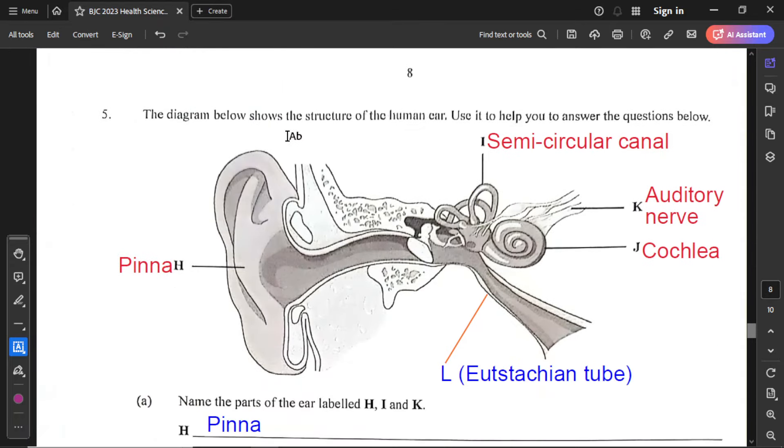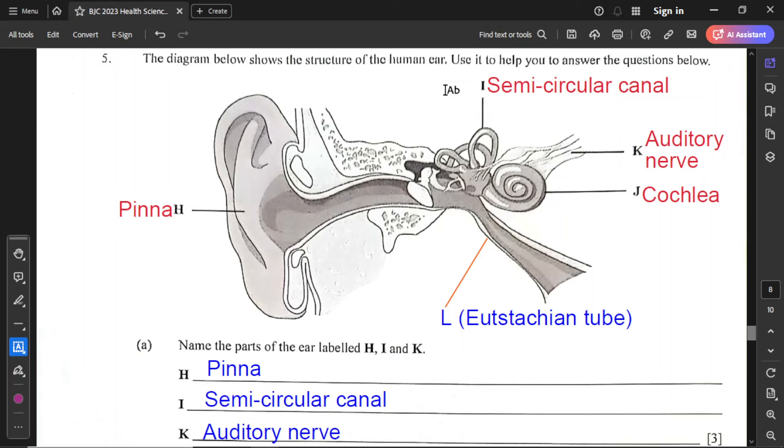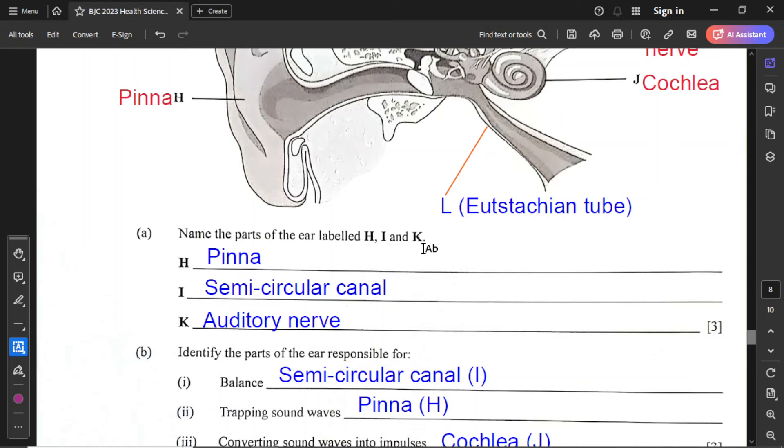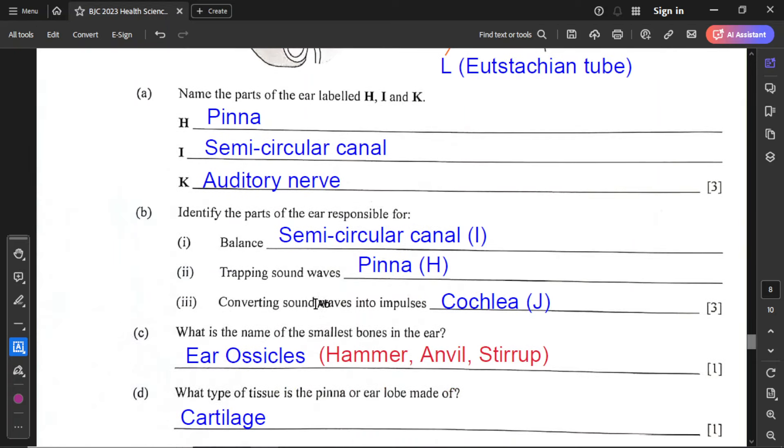For question number 5, the diagram below shows the structures of the human ear. Use it to help answer the questions below. I have already labeled this. You have the pinna, semicircular canal, auditory nerve, cochlea, and eustachian tube. Part A: name the parts of the ear labeled H, I, and K. H is pinna, I is semicircular canal, and K is auditory nerve. For part B, identify the parts of the ear responsible for balance - that's the semicircular canal. For trapping sound waves, it's the pinna. The pinna receives and captures sound waves. For converting sound waves into impulses, that is the cochlea.